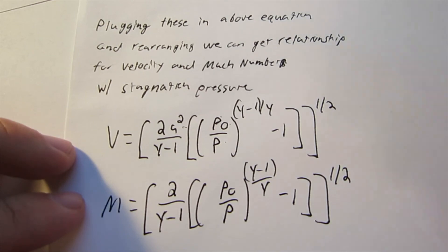And we know our gamma value for air, we can calculate our air speed velocity. So that's a very handy thing to know.